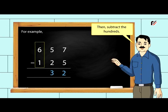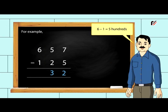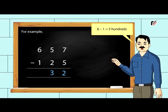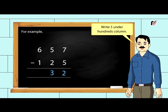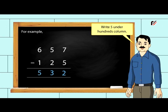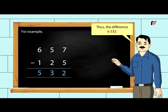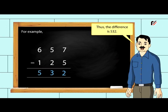Then, subtract the hundreds: six minus one equals five hundreds. Write five under the hundreds column. Thus, the difference is 532.